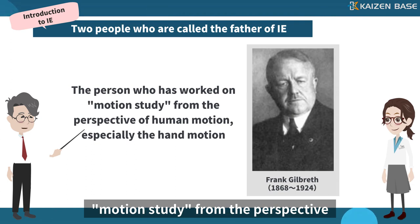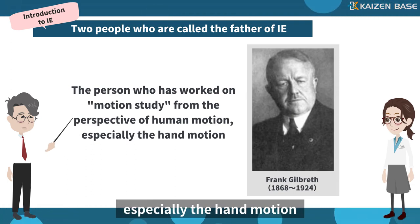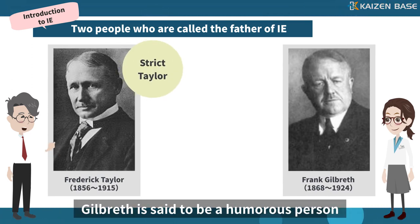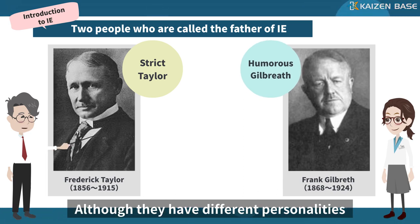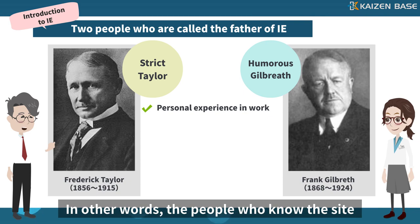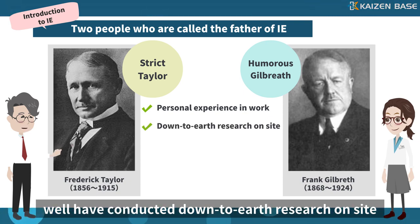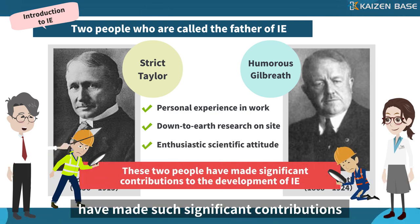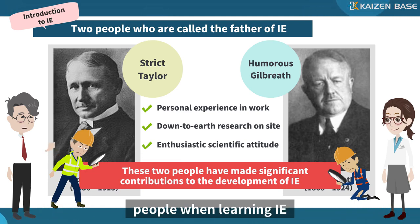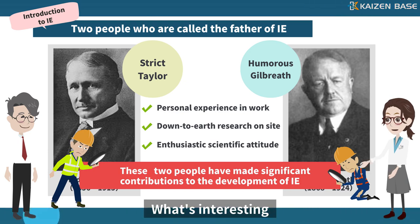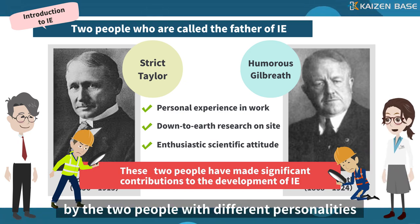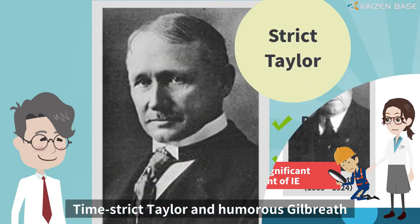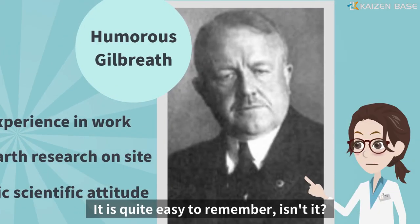Gilbreth is the person who worked on motion study from the perspective of human motion, especially hand motion. Taylor is said to be a person who is strict about time, while Gilbreth is said to be a humorous person. Although they have different personalities, they both have personal experience in work — people who know the site well and conducted down-to-earth research on site with an enthusiastic scientific attitude. Taylor and Gilbreth have made such significant contributions to IE that they are indispensable when learning IE. Time-strict Taylor and humorous Gilbreth — it is quite easy to remember.